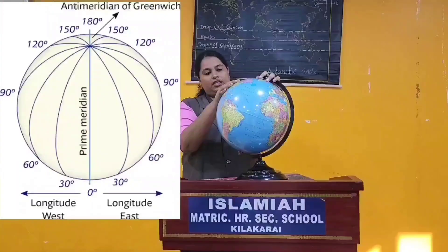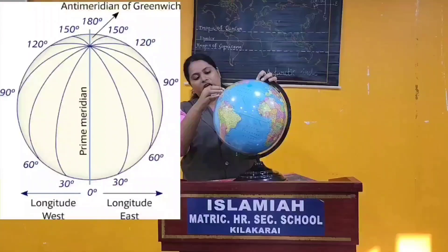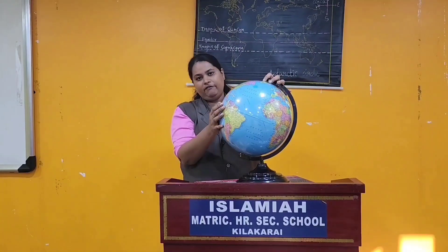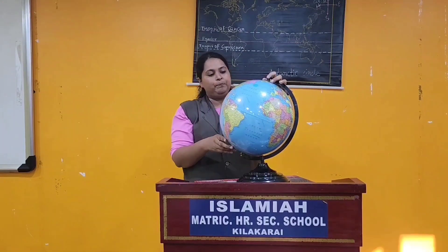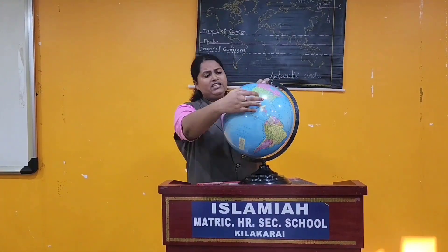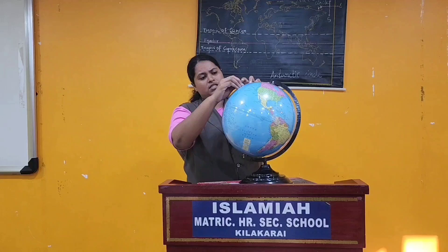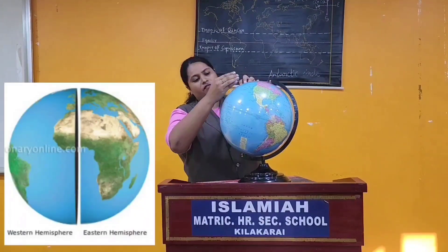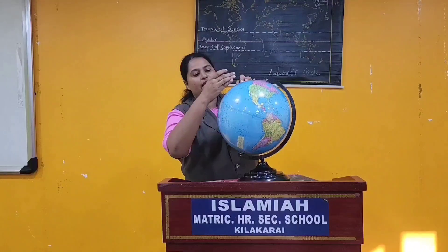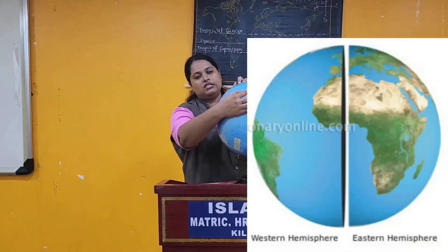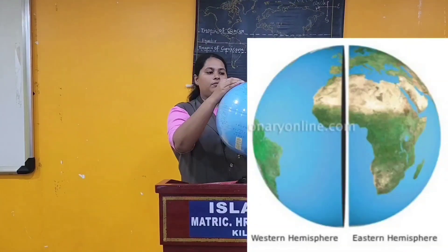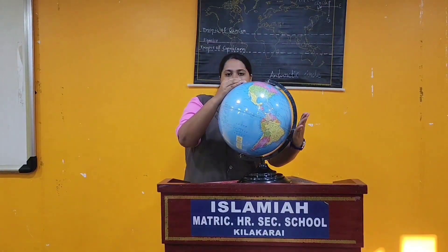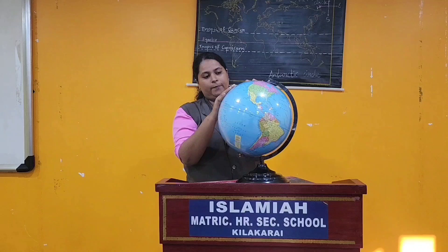Greenwich meridian is nothing but the line passing through the city of Greenwich, from which the name has been derived. From the prime meridian, you have the east hemisphere and the west hemisphere. From zero degrees to 180 degrees east, that is called your eastern hemisphere. And from zero degrees west, towards your western side, it is your western hemisphere.